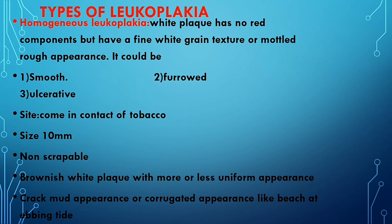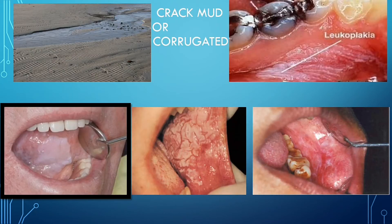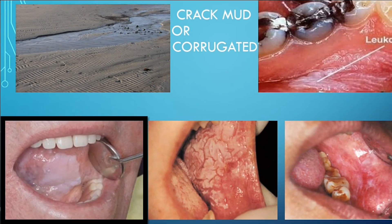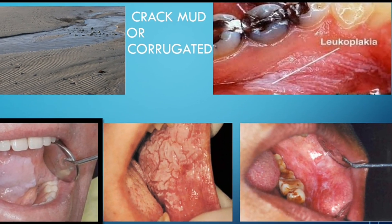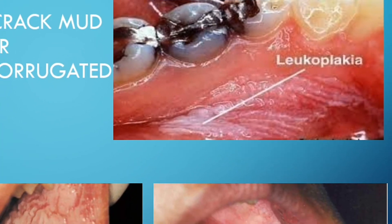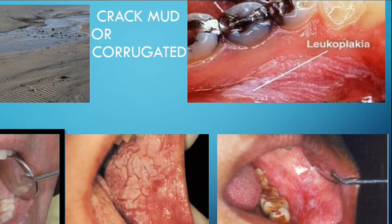The size is typically 10 mm. It is non-scrappable and presents as a brownish-white plaque with more or less uniform appearance. It appears as a cracked mud appearance or corrugated appearance — like a beach at evening tide. Here's a picture of a beach at evening tide, and homogeneous leukoplakia resembles this pattern.